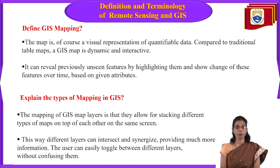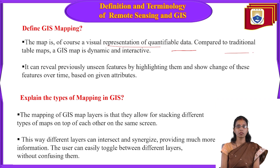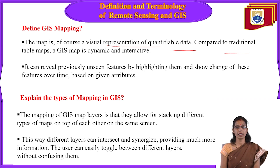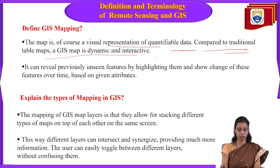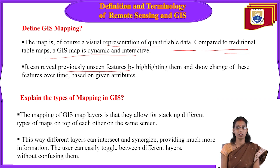GIS mapping: a map is a visual interpretation of quantifiable data. Compared to traditional tables and maps, a GIS map is a dynamic and interactive image — a visual representation using symbols and themes. It can reveal previously unseen features by highlighting them and showing changes over time based on given attributes.